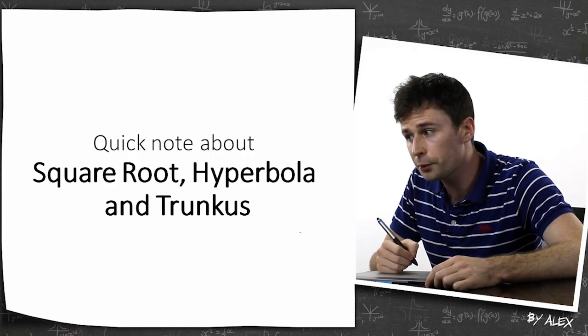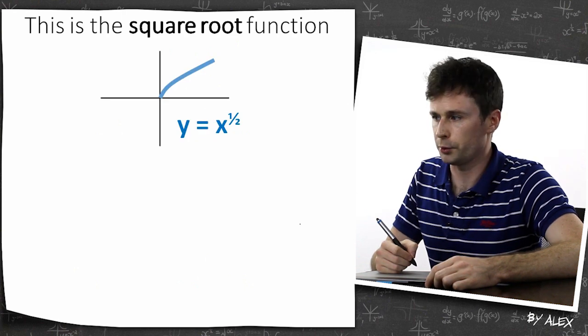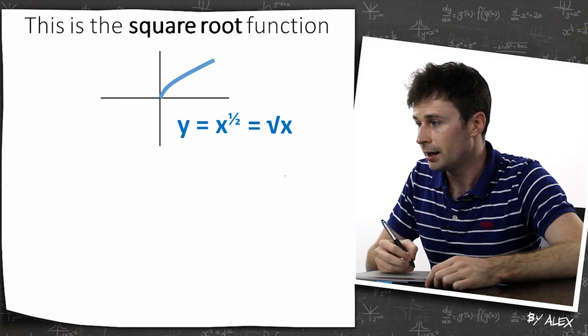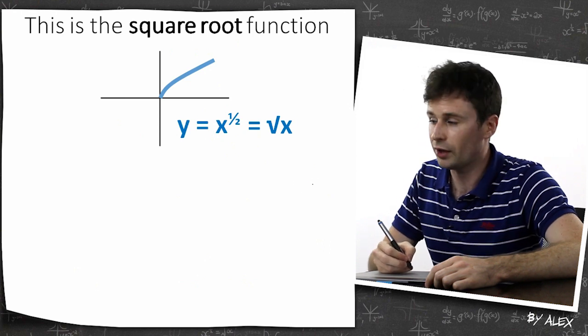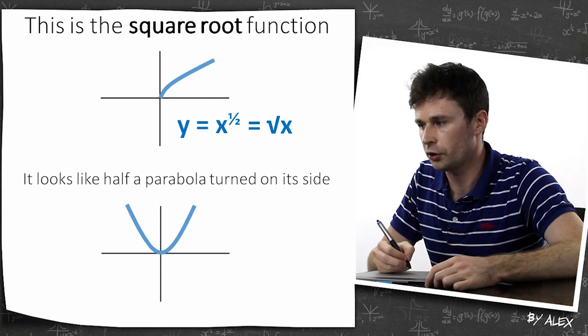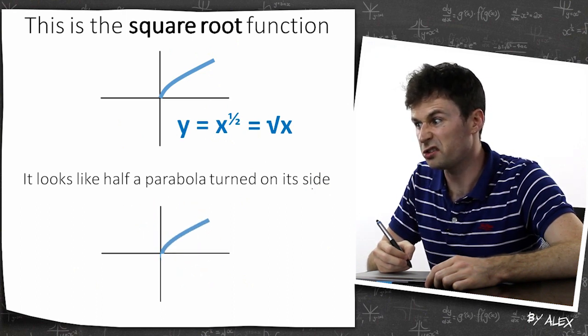So a quick note about square root, hyperbola, and truncus. So this is a square root function. You can also see it as x square root of x, as well as x to the power of half. And it looks like half a parabola turned on its side. It really does, doesn't it?